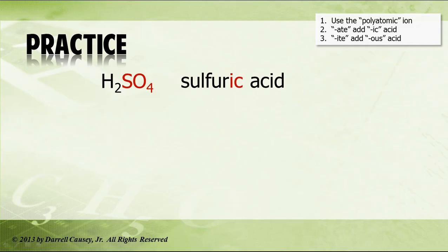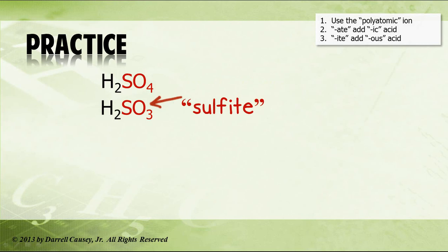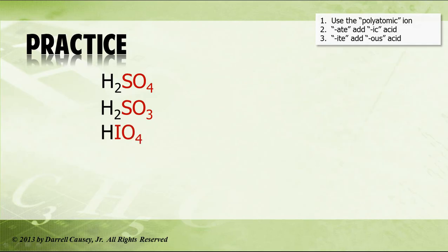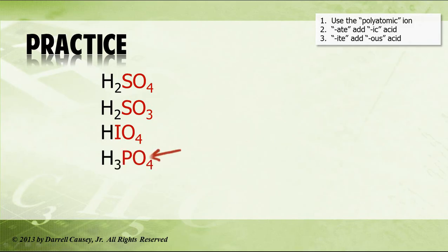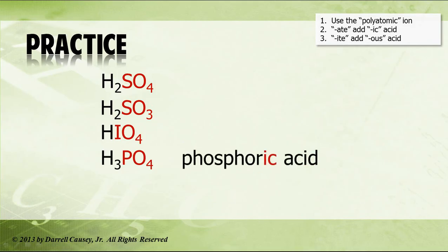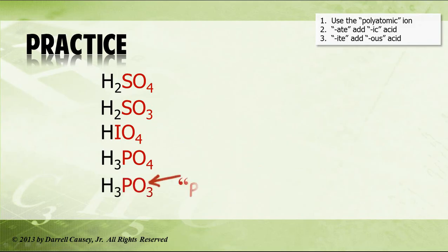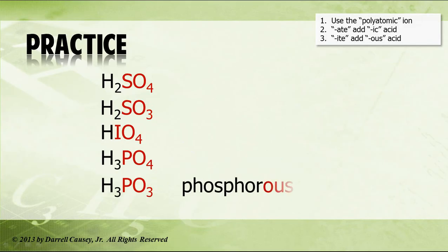H2SO3: sulfite — that gives us sulfurous acid. -ite means add -ous. HIO4: the polyatomic ion is periodate, so periodic acid — -ate means add -ic. H3PO4: phosphate, -ate again, so we add -ic: phosphoric acid. And then H3PO3: PO3 is phosphite, -ite means -ous, so phosphorous acid.